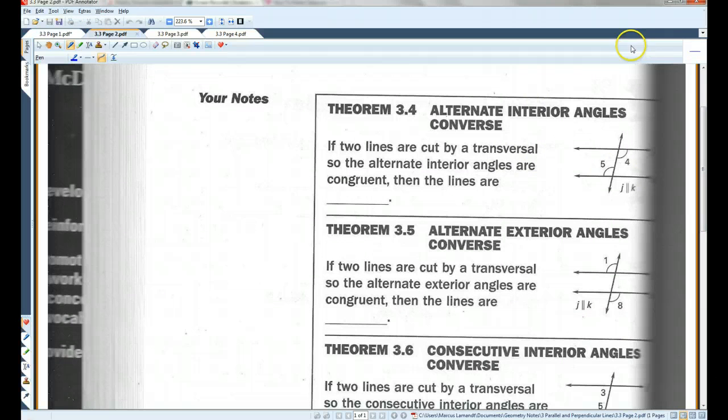Alright, theorem 3.4, alternate interior angles converse. Pretty much the same thing as the other one. If two lines are cut by a transversal, so the alternate interior angles are congruent, then the lines are parallel.